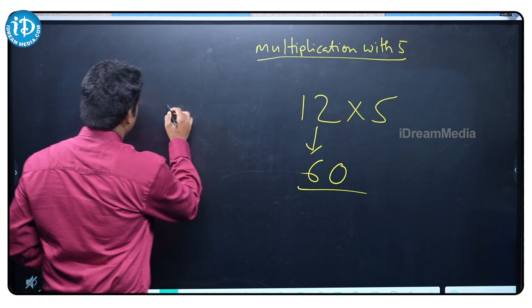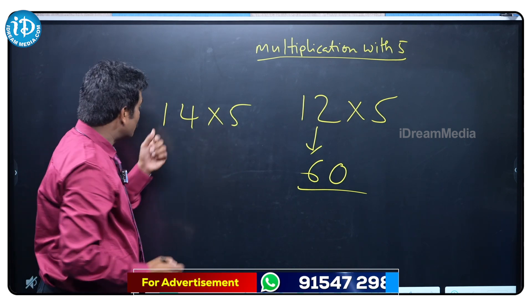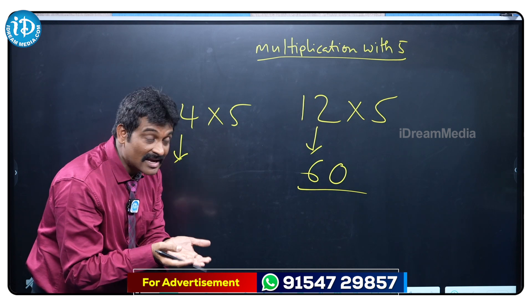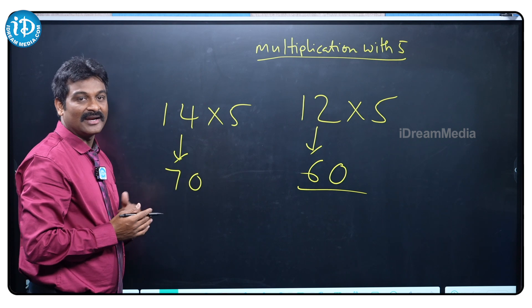And in the same way, I want to take one more example, 14 times 5. What is the half of 14? 14 half is 7. Keep a 0, that's it, your answer is 70. We calculate like this.